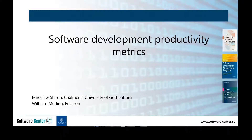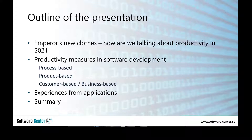I wanted to talk about modern software development productivity metrics, which is a research we have initiated together with Tetra Pack in the last sprint. Software development productivity — it's basically the emperor's new clothes. Everybody has been talking about productivity for a long time, so what's new in 2021? We'll talk about productivity measures in software development that are really being used and that I have seen doing a really good job in increasing productivity — either process-based, product-based, or customer/business-based — and I'll share experiences from different companies.